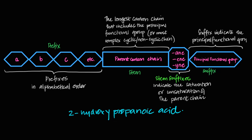This systematic approach helps you think through names logically. I always start with the principal functional group, then the number of carbon atoms and how they're bonded, and everything else comes in afterwards — prefixes at the end. Let's go over all four parts of the name systematically: stem, stem suffix, suffix, and prefix.